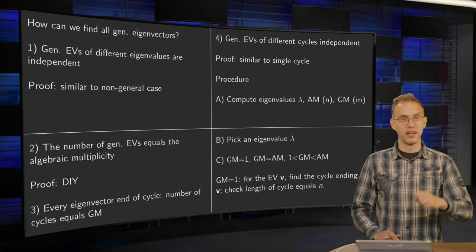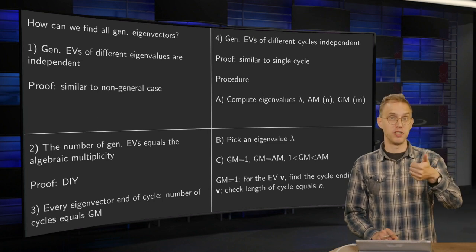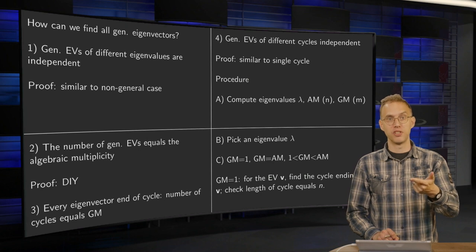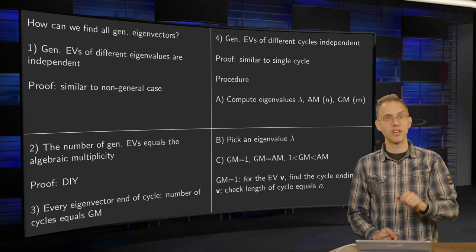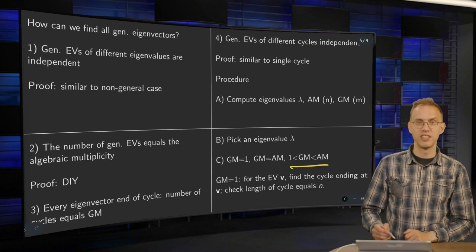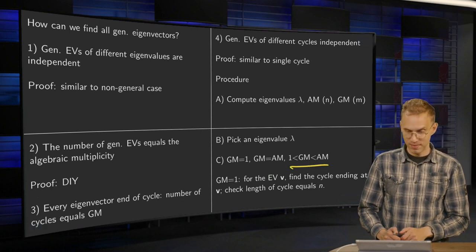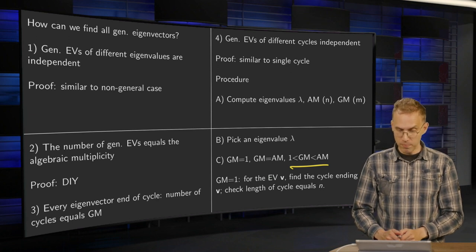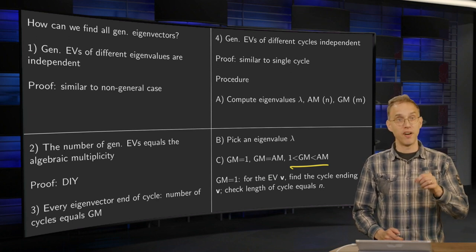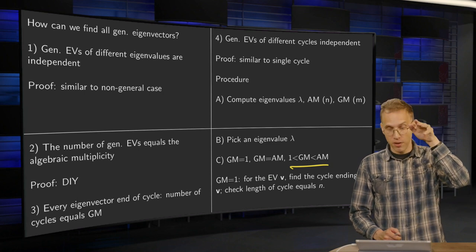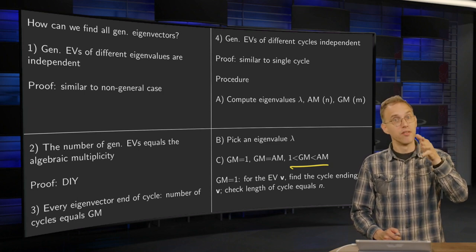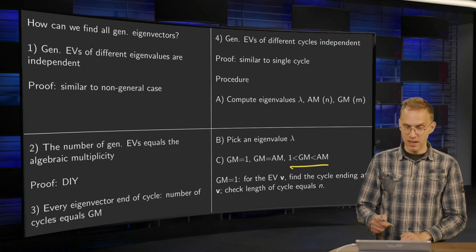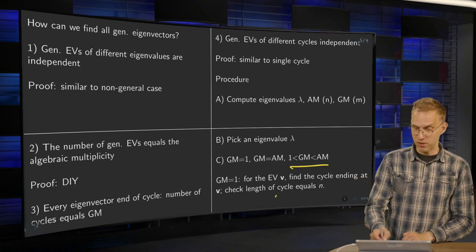And then we can have three cases. Either the geometric multiplicity of λ is one, or the geometric multiplicity equals the algebraic multiplicity. In both cases, we are happy. Or this in-between case, then we are not happy. So for the geometric multiplicity one, we have one eigenvector. We will find the cycle ending at this v and check whether this length of the cycle indeed equals m.